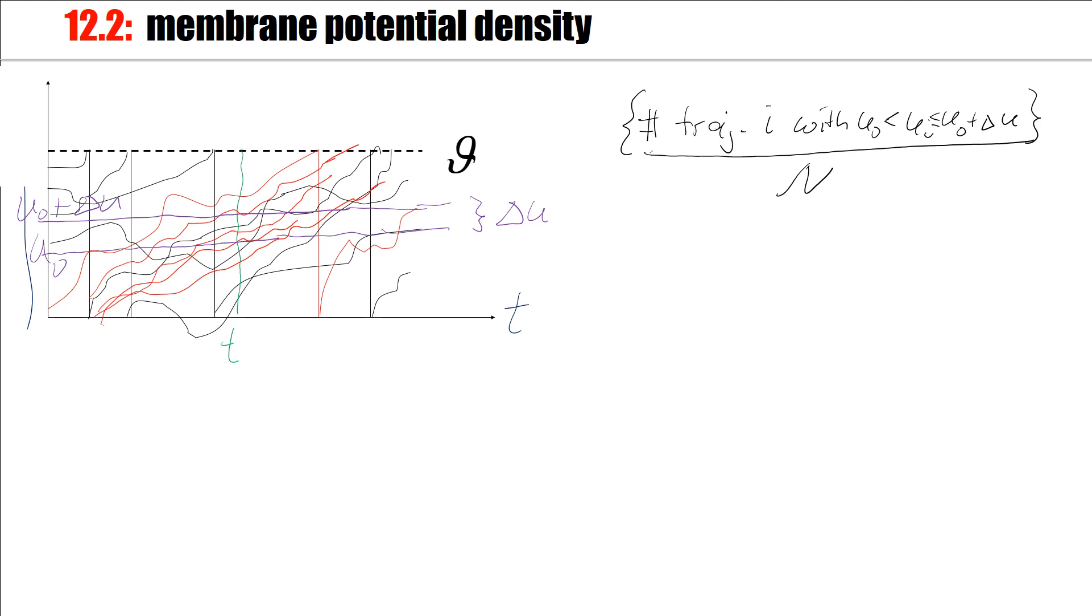And I think of this quantity in the limit that N is really large. And then this quantity here is my integral over a density, p of u prime at time t, du prime from u0 to u0 plus delta u.